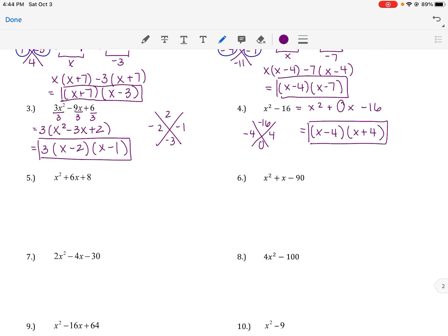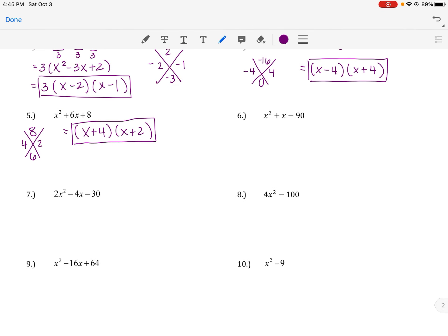We're looking for what multiplies to 8 and adds to 6. What multiplies to 8? 1 and 8 doesn't work. What about 4 and 2? 4 and 2 does add to 6. So x plus 4, x plus 2. How about on this one? We've got a negative 90. In this case it just has an x, so that's really 1x, adding to 1. The two numbers are 10 and negative 9. So here we'd have x plus 10, x minus 9.